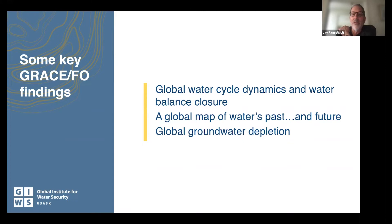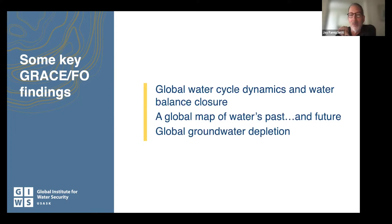GRACE gives us that storage change, which we never had before. Always — still in textbooks — we talk about assuming delta S is equal to zero, which is basically nonsense. And a global map of basically trends — I call it a global map of water's past and probably future too, unless we reverse climate change and manage groundwater much better. That leads to the third part: global groundwater depletion.